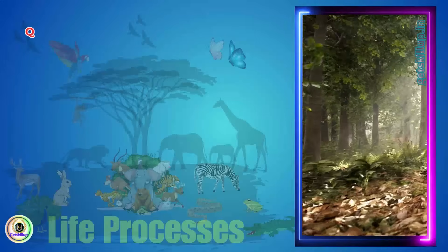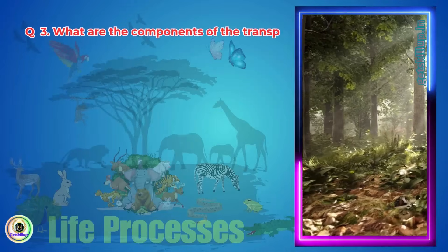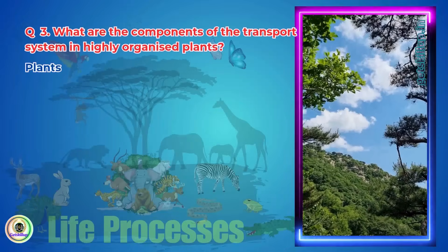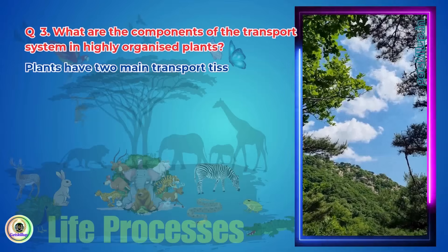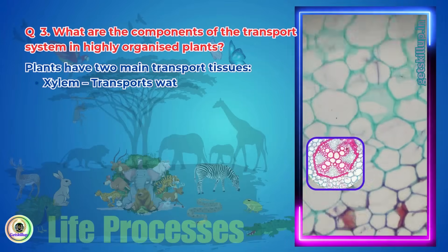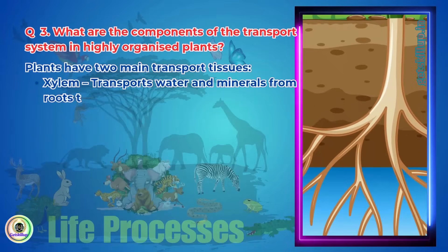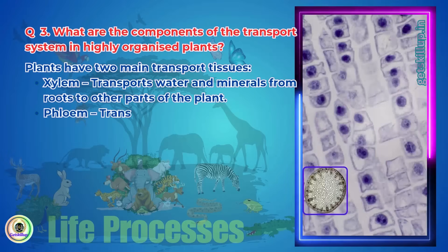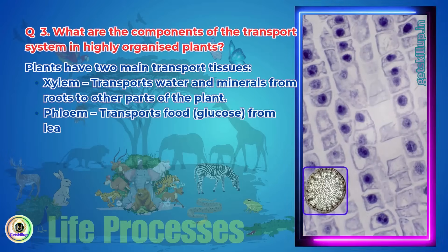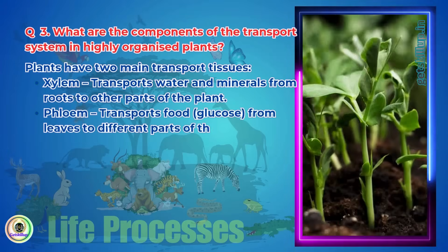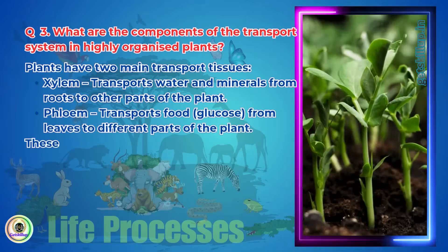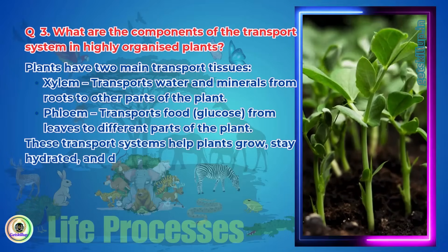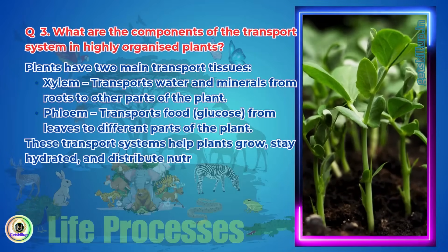Question 3. What are the components of the transport system in highly organized plants? Plants have two main transport tissues. Xylem transports water and minerals from roots to other parts of the plant. Phloem transports food (glucose) from leaves to different parts of the plant. These transport systems help plants grow, stay hydrated, and distribute nutrients.